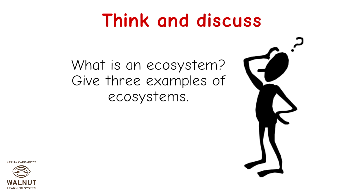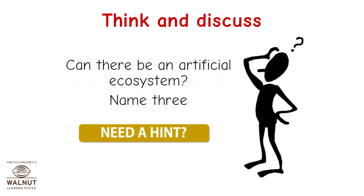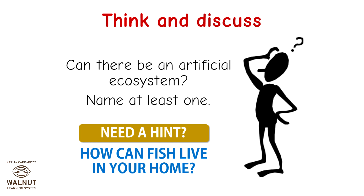Think and discuss. What is an ecosystem? Give three examples of ecosystems. Can there be an artificial ecosystem? Name at least one. Need a hint? How can fish live in your home?